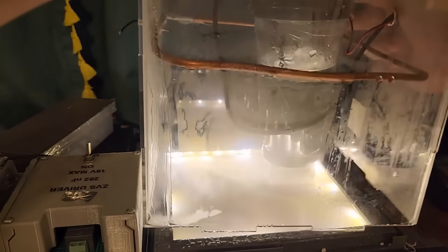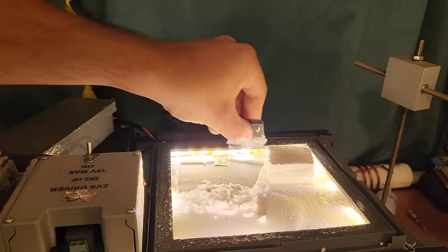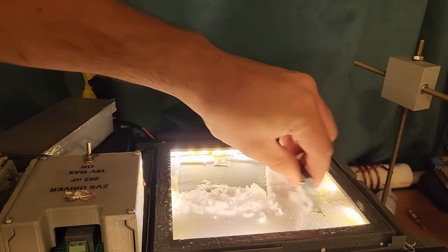I fixed my leak and ran again for about an hour. This time I managed to get a beautiful blanket of fluffy snow that was about 4 or 5 millimeters thick. This actually had the consistency of natural snow.